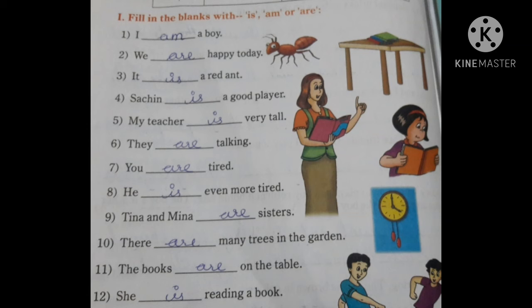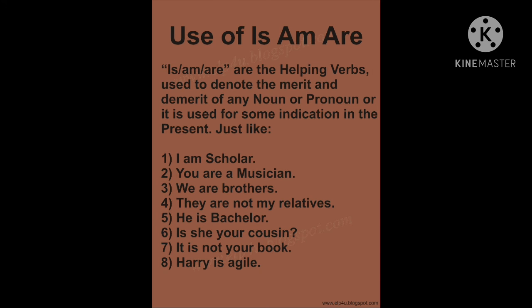Children, here the sentences show how 'is', 'am', or 'are' are used in a sentence. These are the present tense sentences. Children, now we will read. Use of 'is', 'am', or 'are' — these are helping words used to denote the merit and demerit of any noun or pronoun, or used for some indication in the present. Just like: 'I am a scholar.'